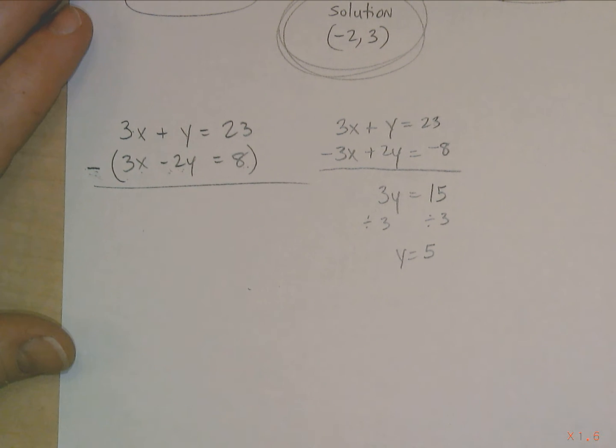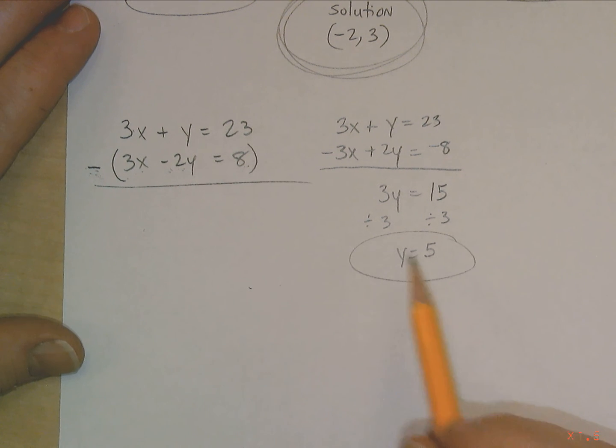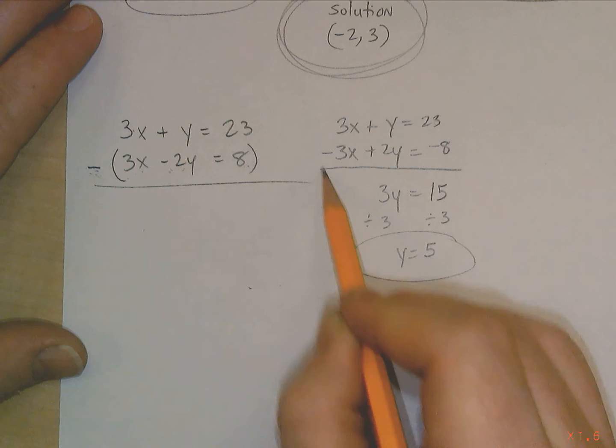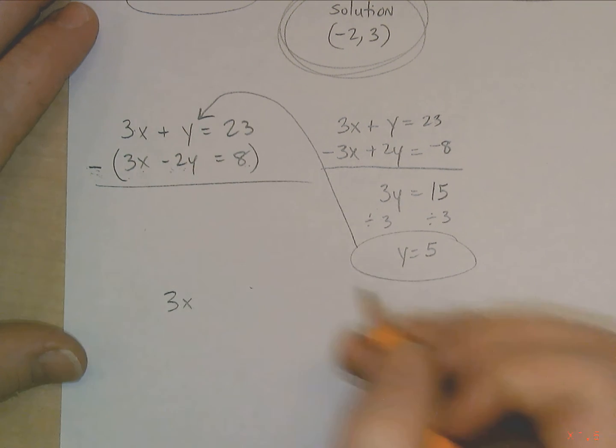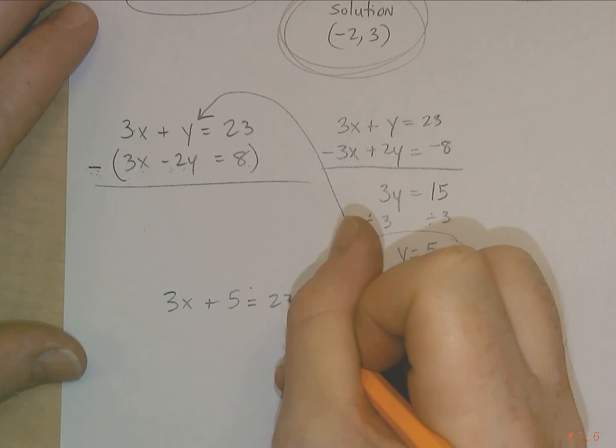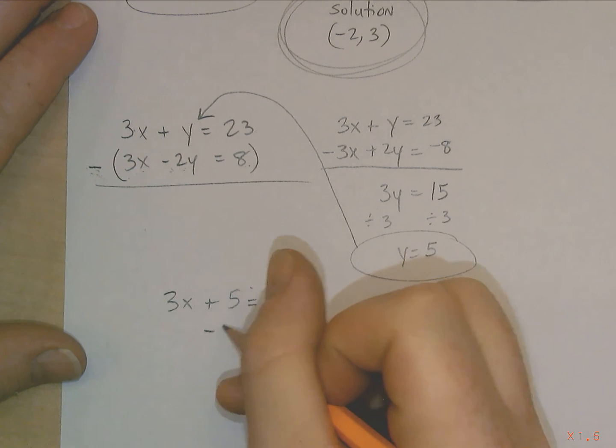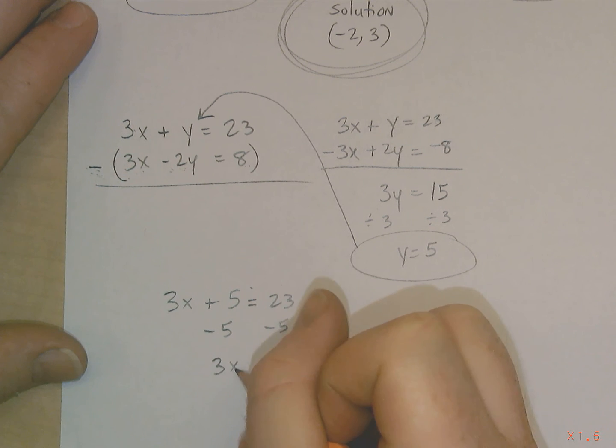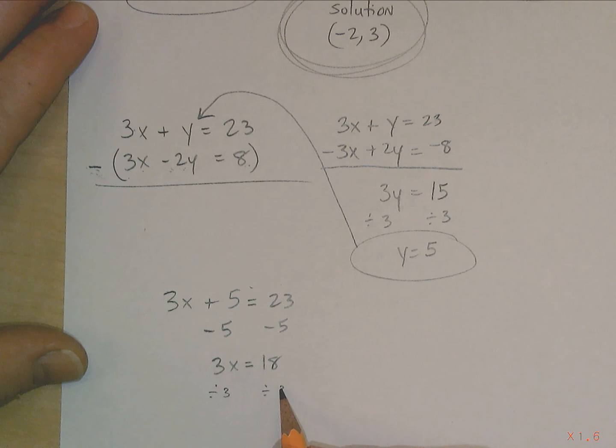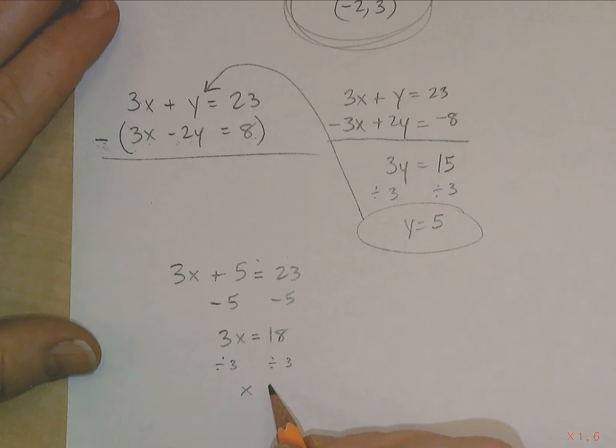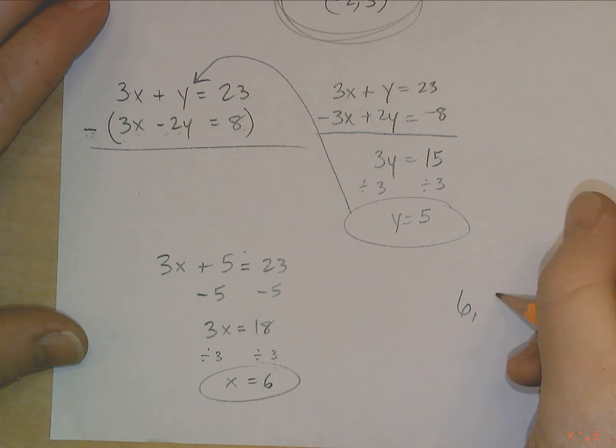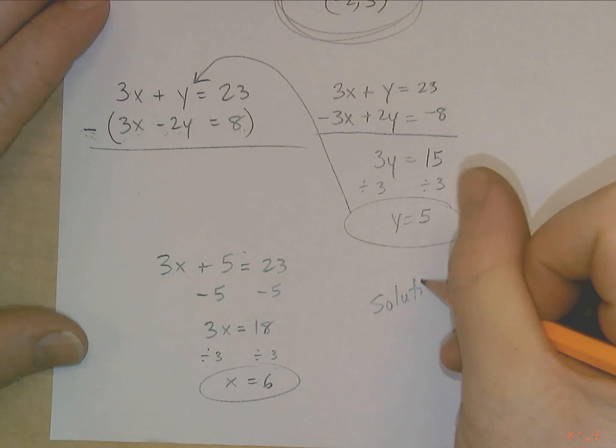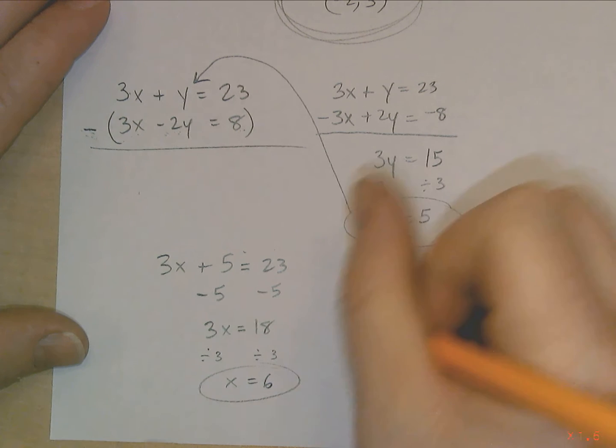Now in order to find out what x is, just simply plug this in where y is to find out what x is. And so we're going to get 3x plus 5 equals 23. Then you just subtract 5 from both sides. 3x equals 18. Then you divide both sides by 3. x equals 6. So the solution is going to be 6 comma 5. That's it, that's the solution.